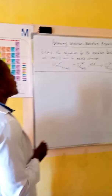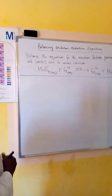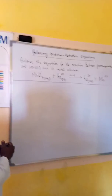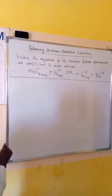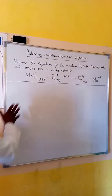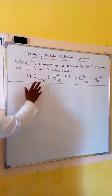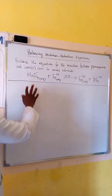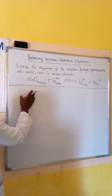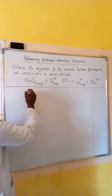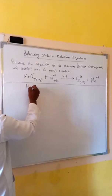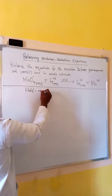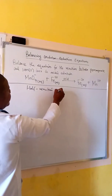In this tutorial we shall look at balancing oxidation-reduction equations. To balance the redox reaction equations, we shall use a method called the half-reaction method.